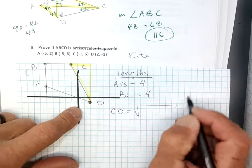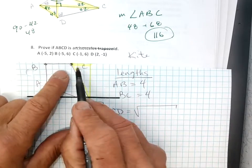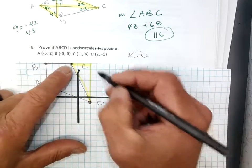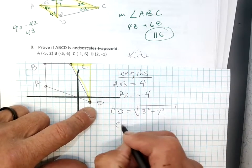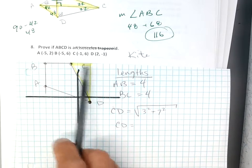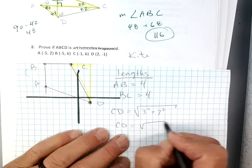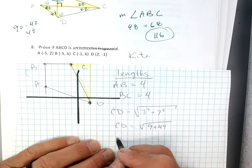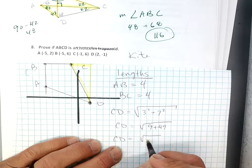So the length of C, D is, because I'm just using Pythagorean's theorem, right? A squared plus B squared equals C squared, but I've already square rooted it. So you have the square root of nine plus 49. So C, D is going to equal the square root of 58. How am I doing?